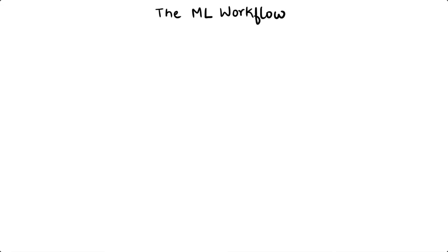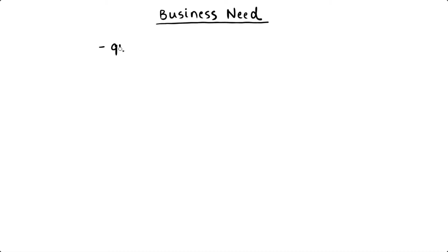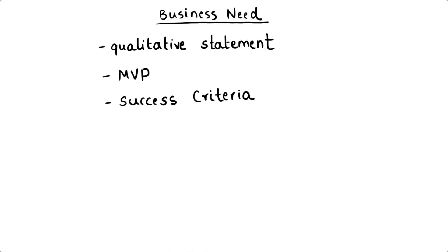Let's take a look at the key steps involved in building a machine learning model. Everything begins with an understanding of the business need, and this is typically driven by the product manager. The product manager may first start off with a general qualitative statement of what they're trying to achieve, and then further analysis would result in the definition of a minimum viable product and success and failure criteria, so that the entire team knows what success would look like. The product manager should also be able to define what type of problem they're dealing with — is it a classification problem, clustering, or regression.